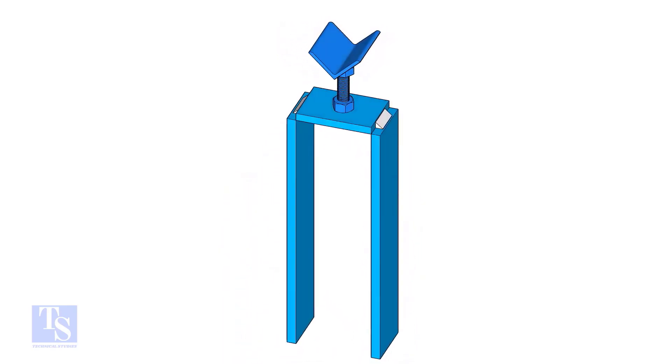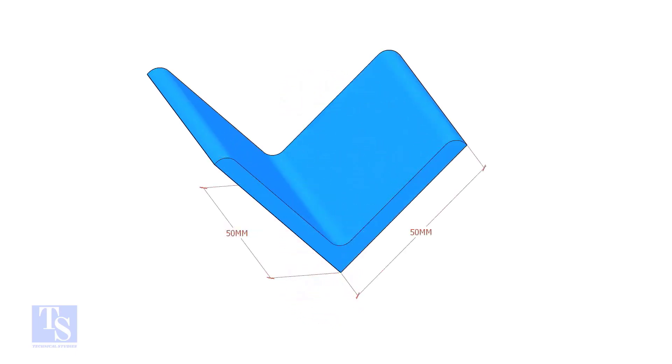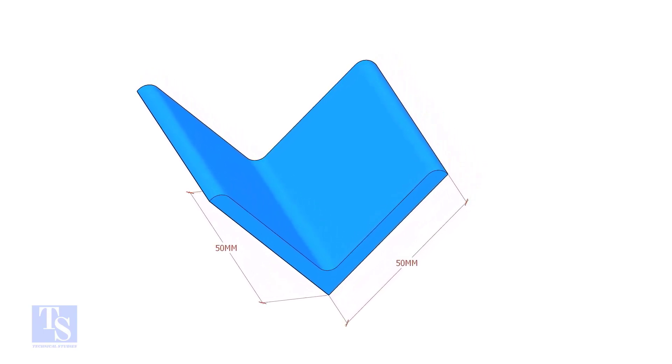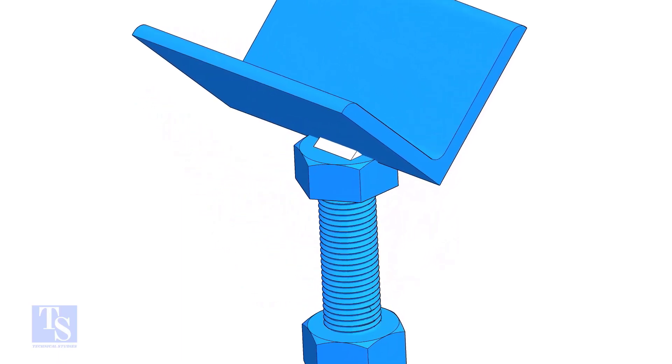To make this tool, we need a half-inch diameter, 3-inch long bolt with two nuts. A 50-50 angle bar, 50mm long. Tack weld the angle bar on the head of the bolt as shown.